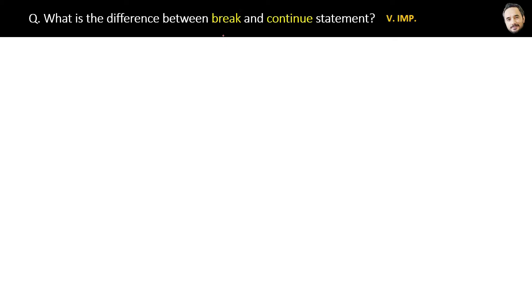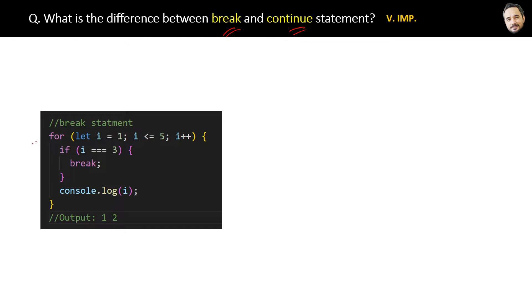What is the difference between break and continue statement? Very important question. See the code here - we have a for loop and we are printing all the values 1, 2, 3, 4, 5 inside it, but before that we put